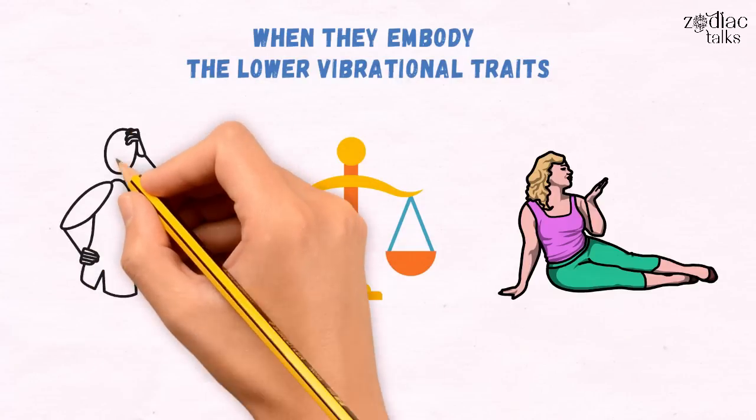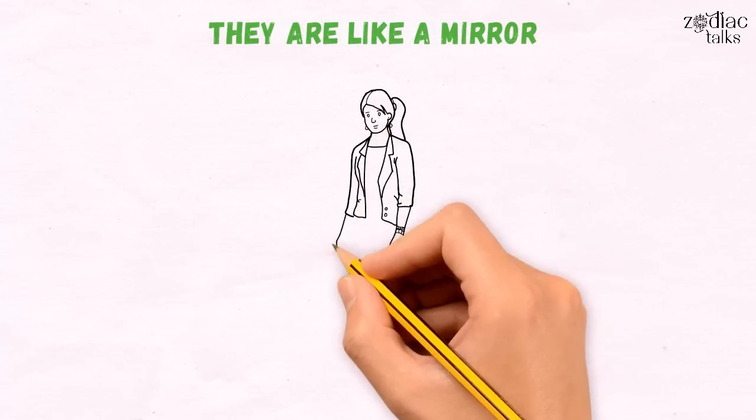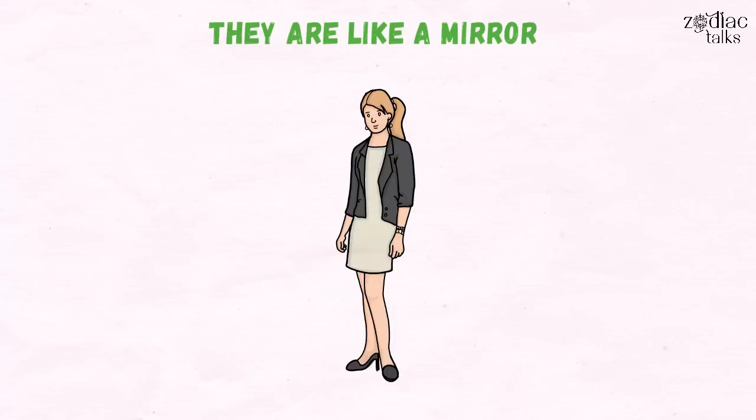These natives are very complex and thus very difficult to figure out. They're like a mirror. They mirror everyone and create personalities tailored for each of their lovers and friends.